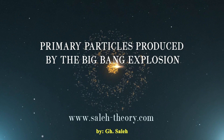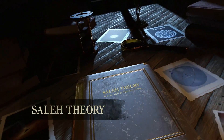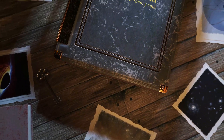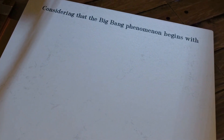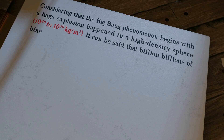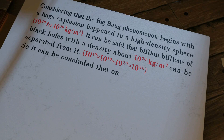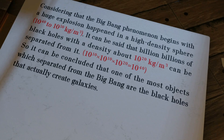Primary particles produced by the Big Bang explosion. Considering that the Big Bang phenomenon begins with a huge explosion in a high-density sphere of 10 to the power of 40 to 10 to the power of 50 kilograms per cubic meter, it can be said that billions of billions of black holes with a density of about 10 to the power of 20 kilograms per cubic meter can be separated from it. So one of the most prominent objects separated from the Big Bang are the black holes that actually create galaxies.